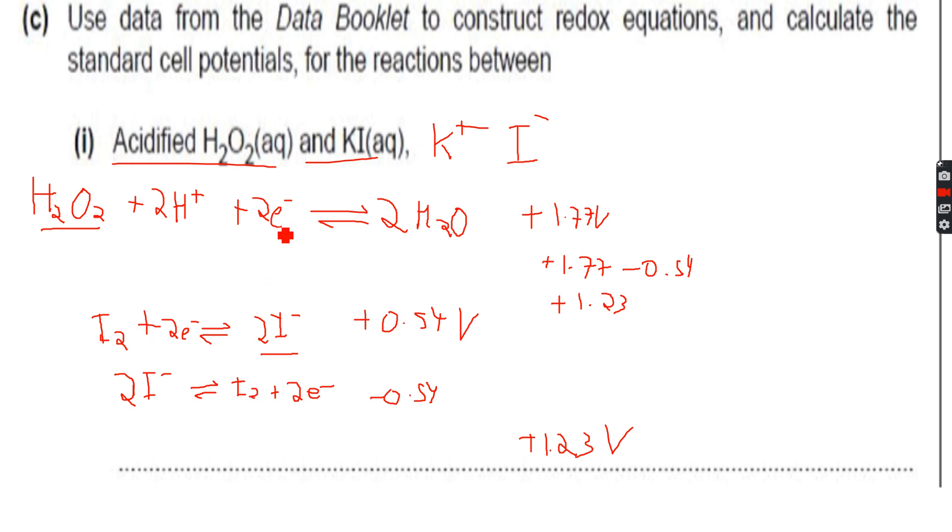The overall reaction they have not asked, but let's for our own benefit write the overall reaction. Two electrons cancel out, so this becomes H₂O₂ plus 2H⁺ plus 2I⁻ giving me 2H₂O plus I₂. Charges balanced, species balanced, so we are done.